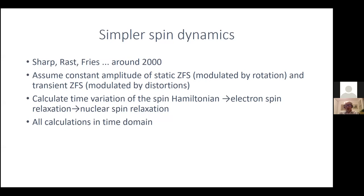There is, however, a possibility to make spin dynamics much simpler, developed by people such as Sharp, Rast, and Fries around the year 2000. What they did was assume that the static zero field splitting — the time-average zero field splitting modulated by rotation — has a certain magnitude, and then there is the transient zero field splitting modulated by distortions of the complex. Under this assumption we can calculate the time variation of the spin Hamiltonian, calculate electron spin relaxation, and then its effect on nuclear spin relaxation. All these calculations are done in the time domain, whereas the slow motion approach is done in the frequency domain.